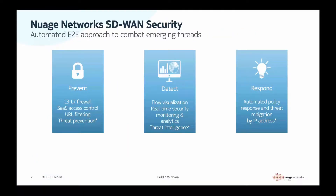In the first demo, we introduced three building blocks of security in SD-WAN networks: Prevent, Detect, and Respond. The Prevent part relies on the stateful firewall capabilities and deep packet inspection to match the traffic against the configured rules or application signatures and take the appropriate action.